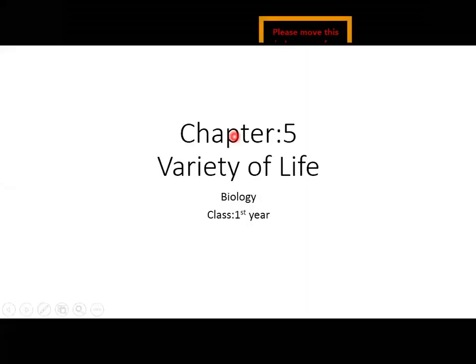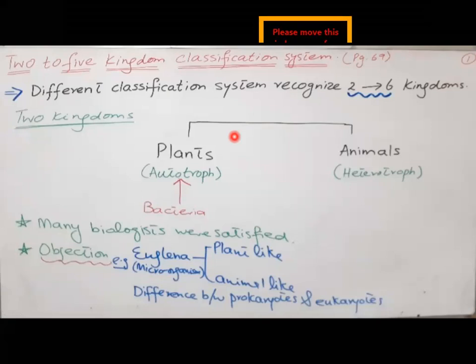Bismillahirrahmanirrahim. Chapter five is the variety of life. This is the topic of two to five kingdom classification systems, on page number 69 of your books. This is a long question but many short questions and MCQs are also there.